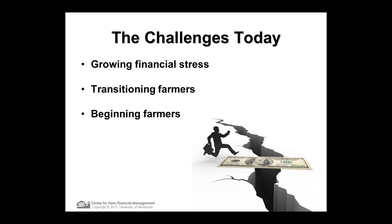That's changed. The last two years, commodity prices have dropped — they're about half of what they were two and a half years ago. As we work through the working capital of producers, the financial stress is just starting to really emerge. Probably over the next six to nine months, we're going to have a lot of hard discussions between producers and their bankers, and not everyone will get financing. I'm going to talk about the financial stress in the U.S. and the tools we're using to look at that.